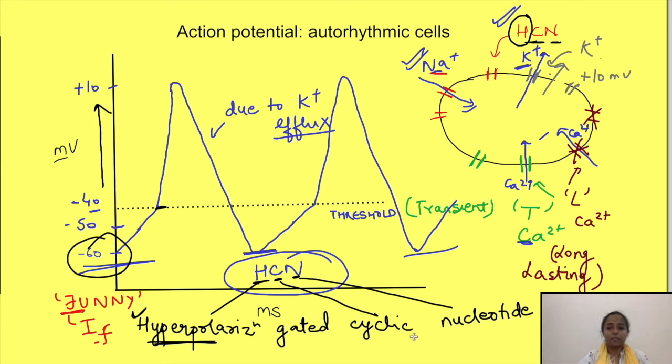One other property of this channel is that they are also regulated by the concentration of cyclic nucleotides inside the cell. That is, they may open faster or slower based on the concentration of cyclic nucleotides inside the cell. This is discussed in another video on mechanism of change in heart rate.